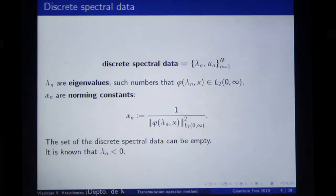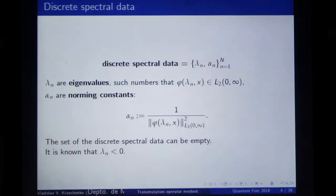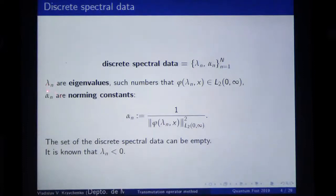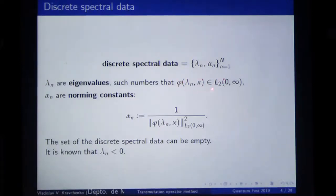This means it is a physical solution which decays at infinity — a good solution with finite energy decaying at infinity. Probably there are no eigenvalues, probably there are some, but if there are some eigenvalues, this is only a finite set. We should find also, besides this lambda_n, the corresponding so-called norming constants, which means we should be able to compute the L2 norms of these eigenfunctions.